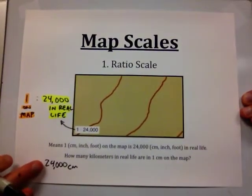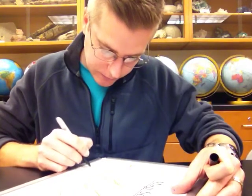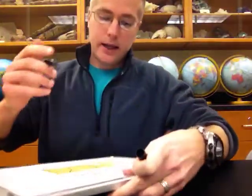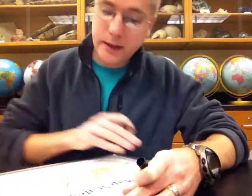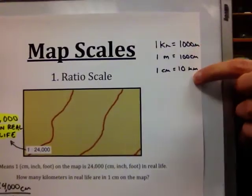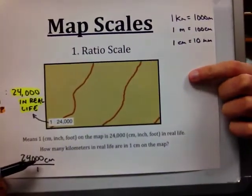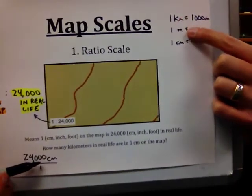The first thing you want to do is put the number you have — 24,000 — over 1, because anything divided by 1 is still itself. We're going to convert from centimeters up to kilometers. Useful conversions to know: 1 kilometer is 1,000 meters; 1 meter is 100 centimeters; 1 centimeter is 10 millimeters. We will choose from these based on our starting point and endpoint. Going from centimeters to kilometers, we will not need the millimeter conversion.